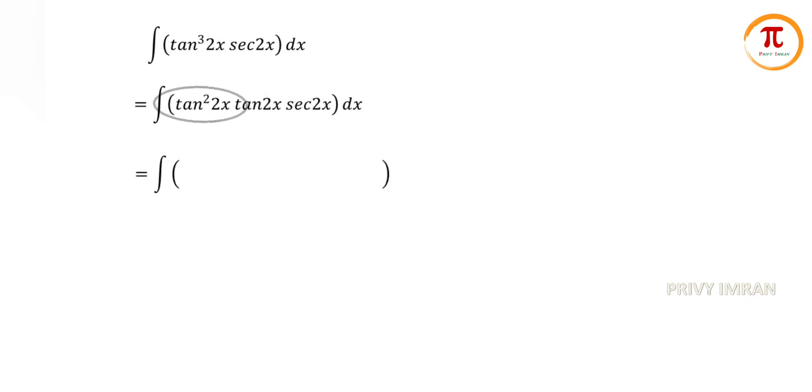Now tan squared 2x can be written as secant squared 2x minus 1, and the remaining term as it is. Now let me multiply tan 2x into secant 2x inside. Now let me split the integration.